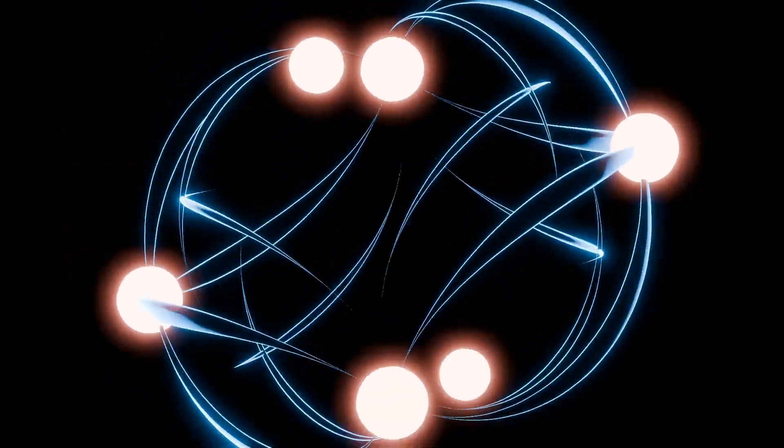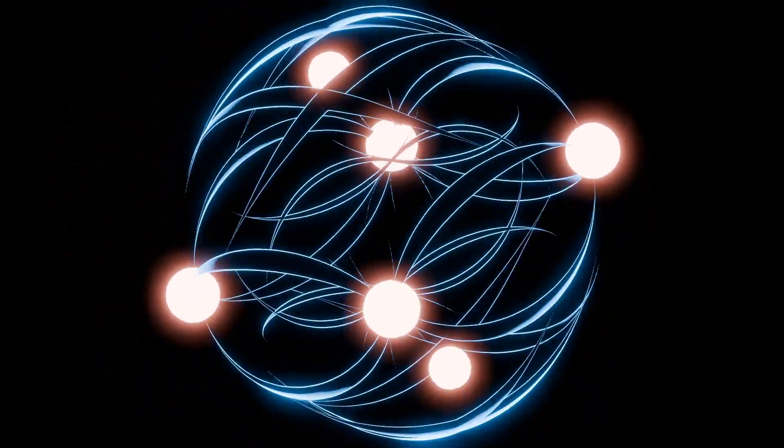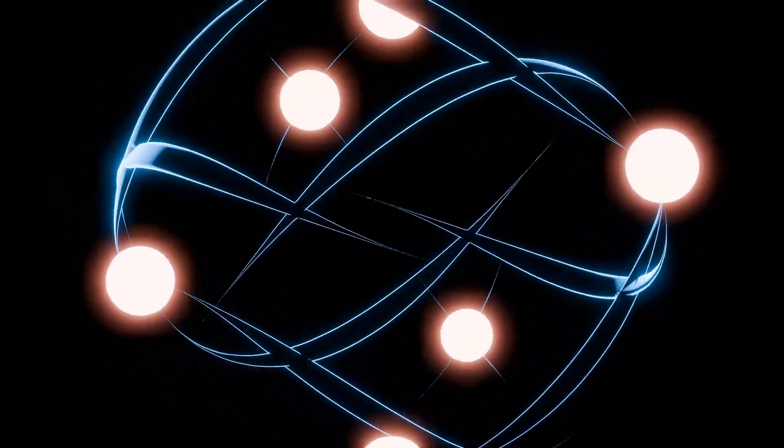Quantum communication flips the rules. You send information not with electrical signals or radio waves, but with single photons, little particles of light whose properties instantly change if someone tries to spy on them. But there's a massive problem. Light doesn't travel forever. Even inside a fiber optic cable, it fades out after around 50 kilometers.